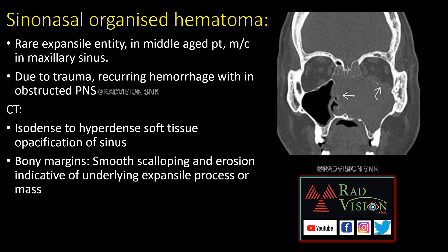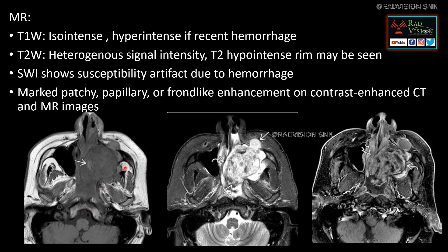Sinonasal organized hematoma is a rare expansile entity in middle-aged patients, most common in the maxillary sinus, occurring due to trauma or recurring hemorrhage within an obstructed sinus. On CT, isodense to hyperdense soft tissue opacification is seen with smooth scalloping and erosions of bony margins, indicating expansion. On MRI, T1 iso-intense lesion with hyperintensities if recent hemorrhage is present. T2 shows heterogeneous signal intensity with peripheral hypointense rim due to fibrosis. SWI shows susceptibility artifact. Marked papillary, patchy, or frond-like enhancement is seen on post-contrast.